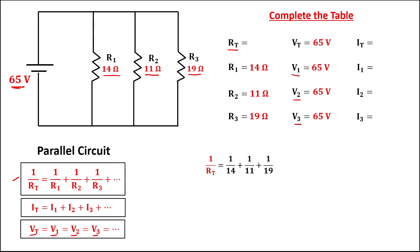Then to find the total resistance using this formula: 1 over the total resistance equals 1 over resistance 1, plus 1 over resistance 2, plus 1 over resistance 3. Then to simplify,